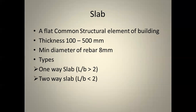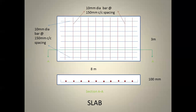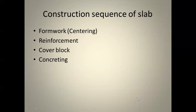To summarize: slab is a flat common structural element with thickness of 100 to 500 mm and a minimum rebar diameter of 8 mm. There are two types — one-way and two-way slab. The plan shows reinforcement in x and y directions; the section shows the thickness and bar arrangement. The construction sequence is: centering, reinforcement, cover block, then concreting.